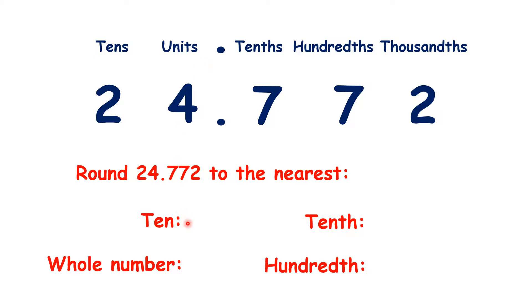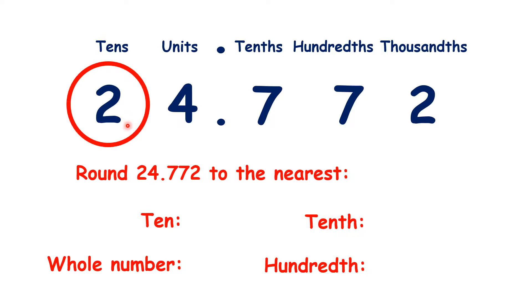If we are rounding to the nearest ten, we do the same thing that we always do. We find our tens, then look across to our units, and because it's a four, we know that we are rounding down.